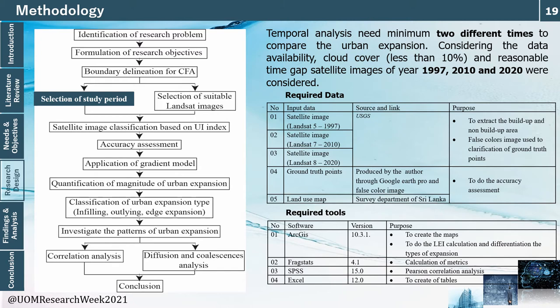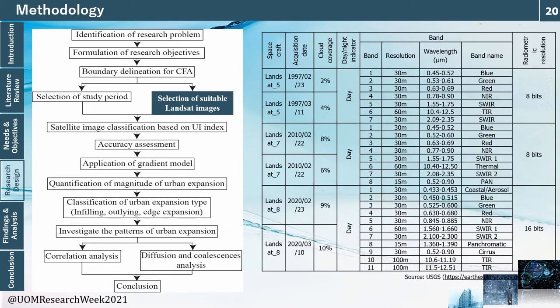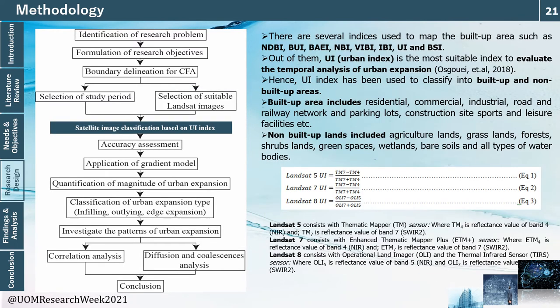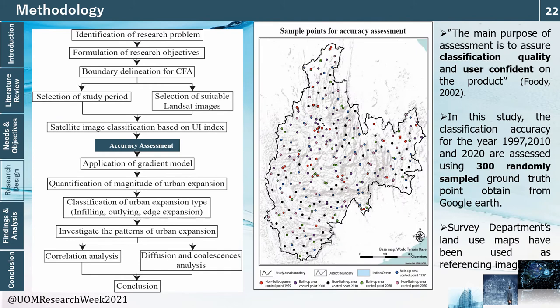Considering urbanization, population shift toward the central region, and environmental sensitivity, the study area was confirmed. The study periods selected are 1997, 2010, and 2020, to allow temporal analysis with specific time gaps. Satellite images were selected with less than 10% cloud coverage; Landsat 5, 7, and 8 with 30-meter resolution were used, requiring approximately two images per period to cover the entire study area. The images were then classified into built-up and non-built-up areas using the Urban Index, which is the most suitable index for temporal analysis of urban expansion and is based on a combination of near-infrared and shortwave infrared bands.